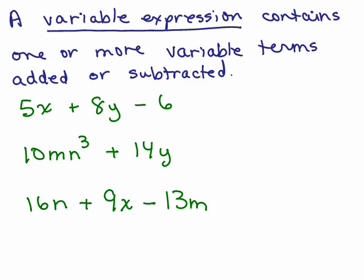A variable expression contains one or more variable terms added or subtracted. So here's three possibilities: 5x + 8y - 6. This contains three terms. And what's tricky, if I ask you what the terms are, instead of thinking of this as minus 6, we're going to think of them as really being added together as a plus and negative 6. So the three terms are 5x, 8y, and negative 6. When somebody asks you what the terms are in a variable expression, we'll take the sign with it.